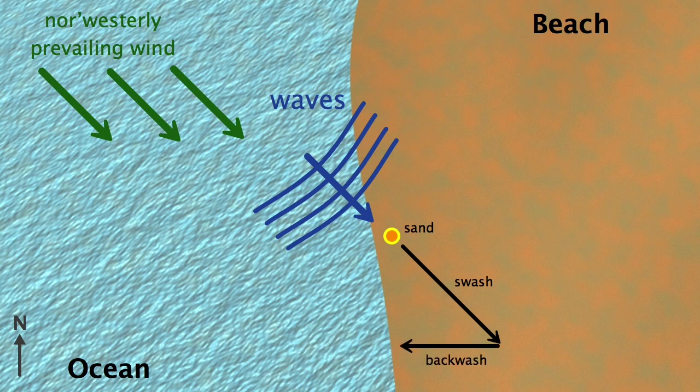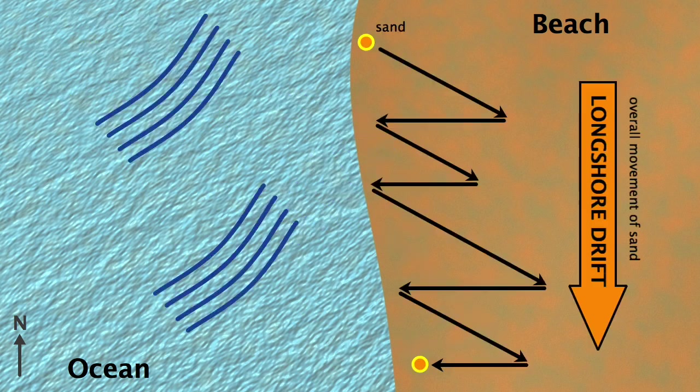This movement is called swash. Then, as the waves retreat and flow back down the beach, the sand grains follow the influence of gravity. They move back down the beach at right angles to the shoreline, following the natural slope that exists there. This movement is known as backwash. Repeated swash and backwash movements cause that zigzag pattern we saw earlier. Overall, the sand has moved sideways, parallel to the shoreline. This is longshore drift in action.